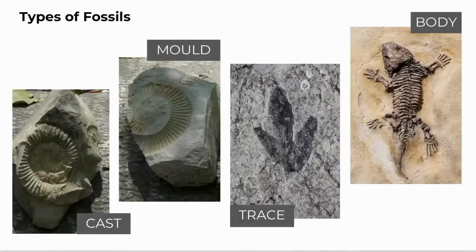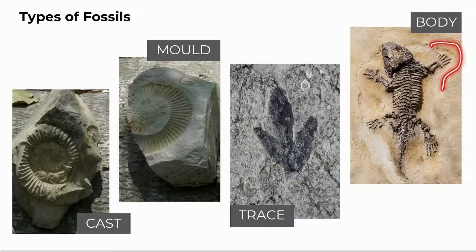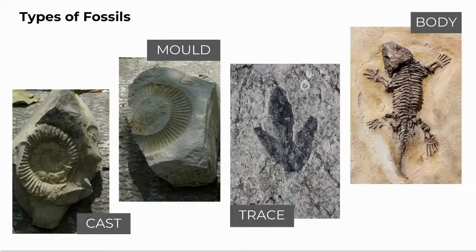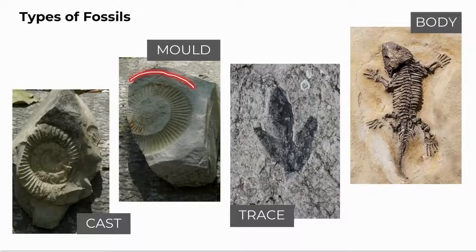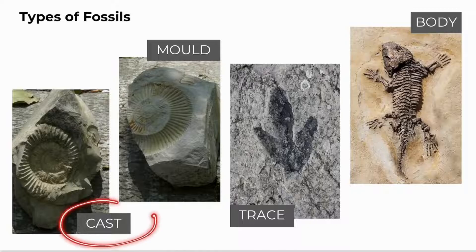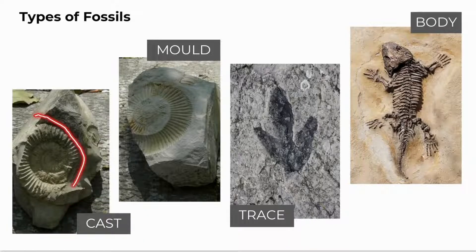Types of fossils include body fossils, where hard parts like bone or exoskeleton are fossilised to form rock. A mould fossil is formed by the space or cavity in the rock left by the organism after the tissues dissolve. A cast fossil is formed when the remains of the organism, minerals, or sediment fill the mould and fossilise to form a cast — essentially a replica of the organism.